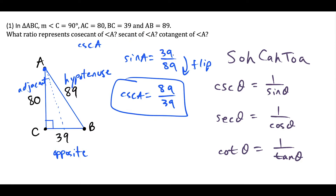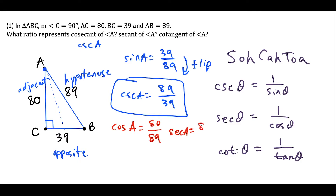Next, we want to find secant of angle A. Secant is the reciprocal of cosine. So we find cosine of angle A: cosine is the ratio of the side adjacent to A, which is 80 units long, over the hypotenuse, which is 89 units. So secant of angle A is just the reciprocal of that, which is 89 over 80.